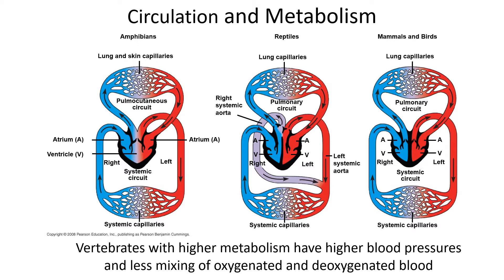In amphibians we have a heart with two atria and one undivided ventricle — a three-chambered heart. Blood is pumped out to the pulmo-cutaneous circuit where it picks up oxygen; cutaneous refers to the skin. Frogs in winter will hibernate at the bottom of a pond and actually exchange oxygen and carbon dioxide with the water through their skin. Oxygenated blood comes back to the heart and is pumped to the systemic capillaries. There is mixing of oxygenated and deoxygenated blood within the heart, but that's not a big deal in amphibians because their metabolism and oxygen requirements are fairly low.